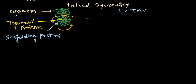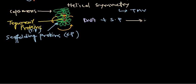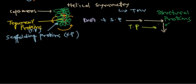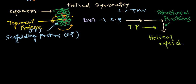The tegument proteins hold on to the capsomeres to help them attach and form an integrated structure. In a schematic presentation: the DNA is first bound with scaffolding proteins. After adding the scaffolding proteins, they bring all the structural proteins in. Then tegument proteins help attach those structural proteins to the DNA and scaffolding proteins, resulting in a helical capsid.